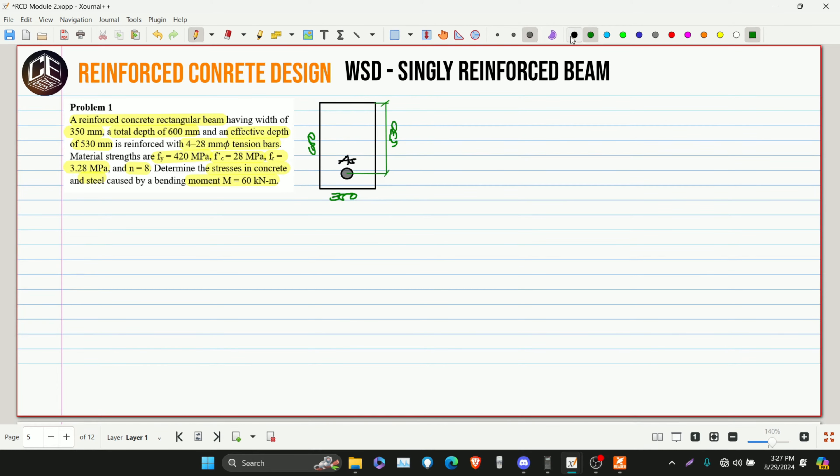What should we do here? We need to assume first if it's cracked or uncracked. Let's assume that our section is uncracked. If the section is uncracked, this is what our transformed section will look like. We'll place the distance of our neutral axis. This is N minus 1 AS for the steel.